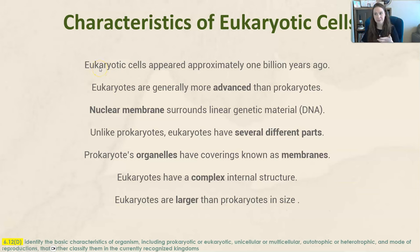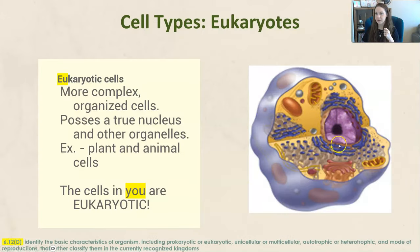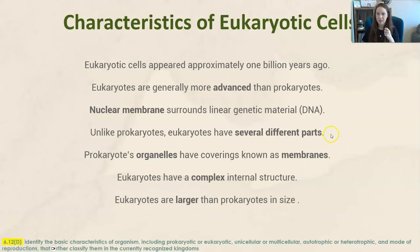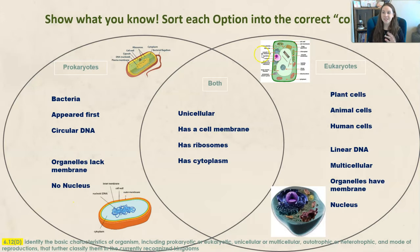Eukaryotic cells are about one billion years old and are generally more advanced than prokaryotic cells. Nuclear membranes surround the DNA in eukaryotes, unlike in prokaryotes. Eukaryotes have several different organelles that perform specific jobs, and those organelles have coverings known as membranes. Eukaryotes have a complex internal structure and are much larger in size than prokaryotes.